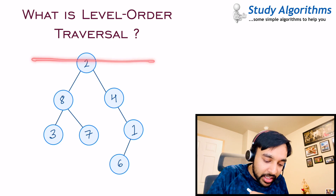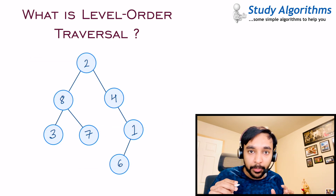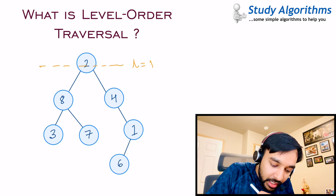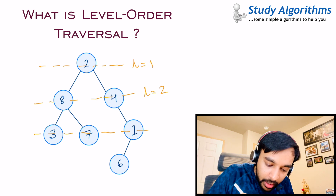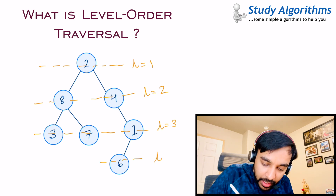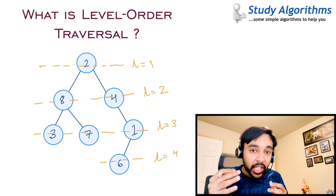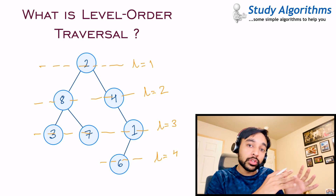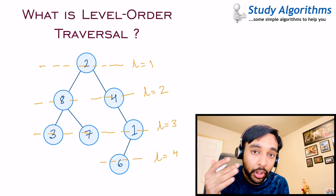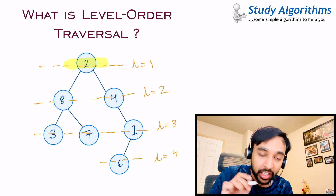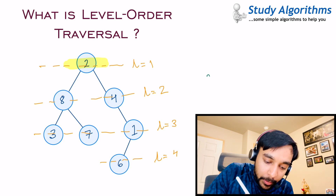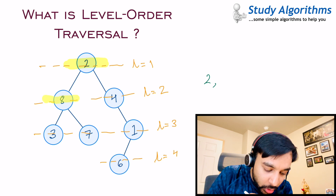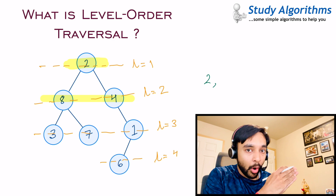You can say that this is level 1, this is level 2, this is level 3, and this is level 4. If someone asks you to do a level order traversal, that means you have to go through all of the levels in serial order. You start with level 1, and you see node number 2. Next, you go to level 2, which has the nodes 8 and 4. Look at the order in which they appear — first you get node 8 and then node 4. You have to go from left to right.